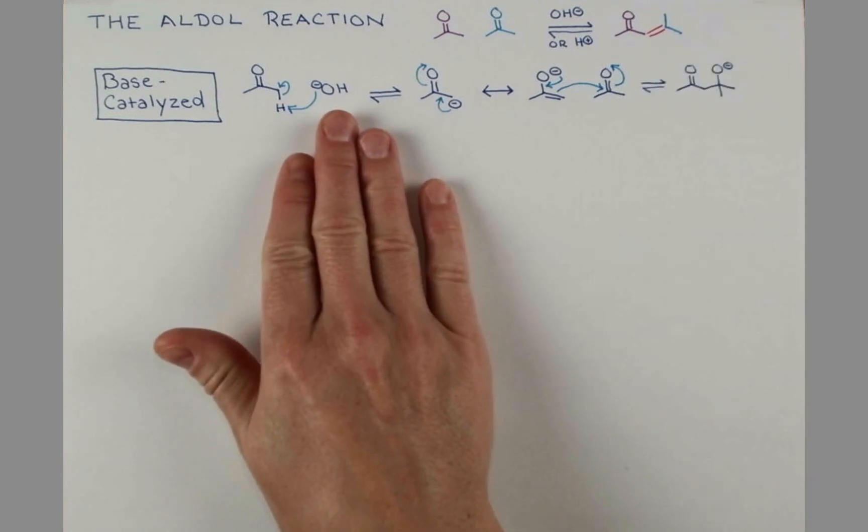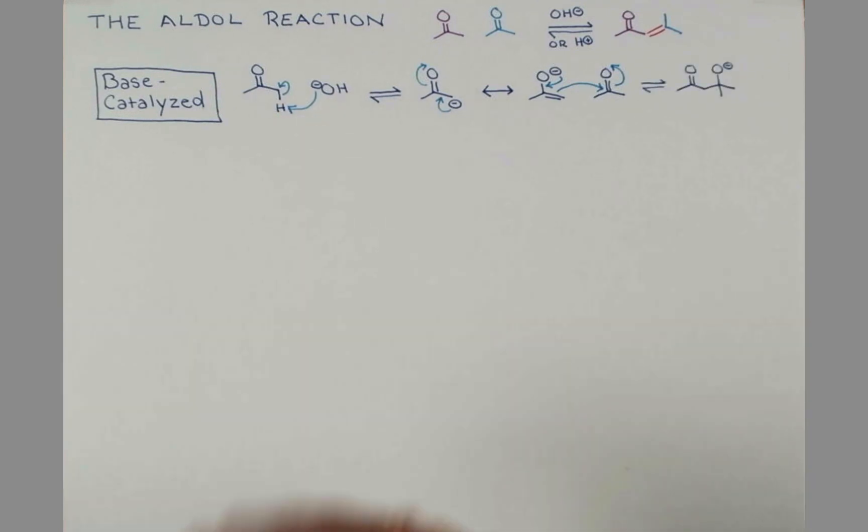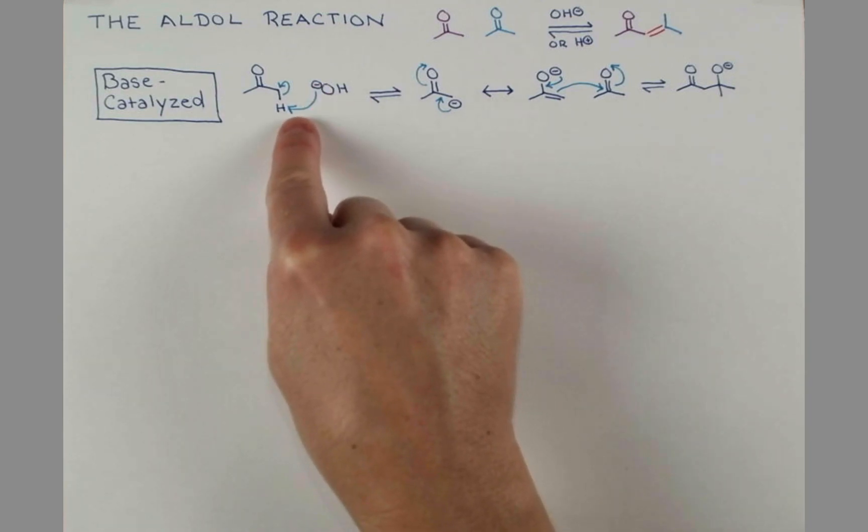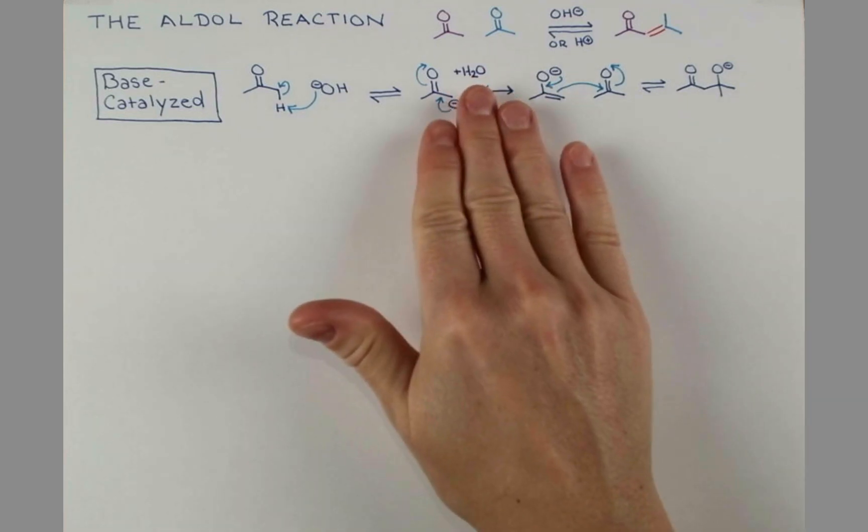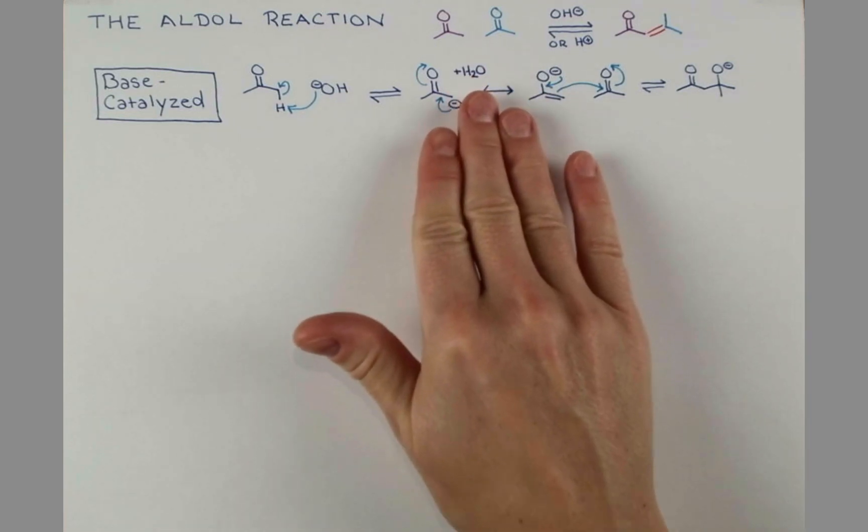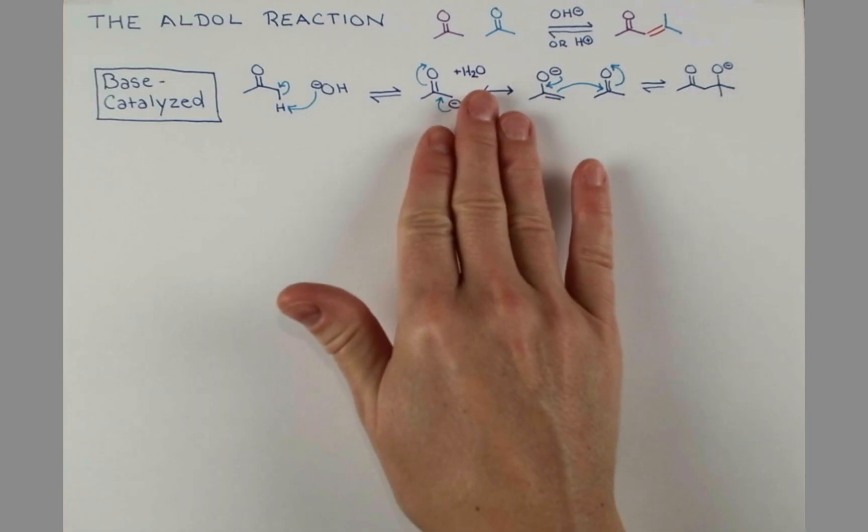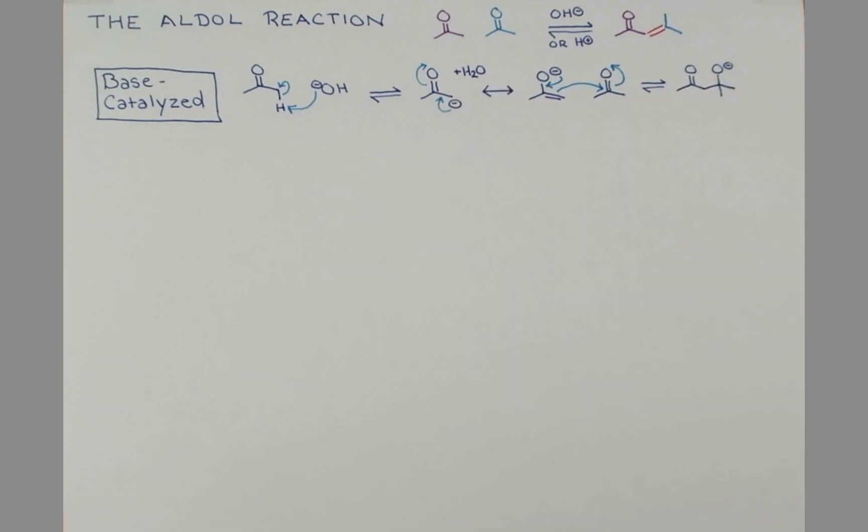Now sodium hydroxide is typically a solution in water. And also in this first step, when we grab the proton, we made a molecule of water. So I'm going to add that into our equation right here. And now we can use this molecule of water to protonate the alkoxide we just made. We'll attack the hydrogen atom of the water, pushing the electrons onto oxygen.